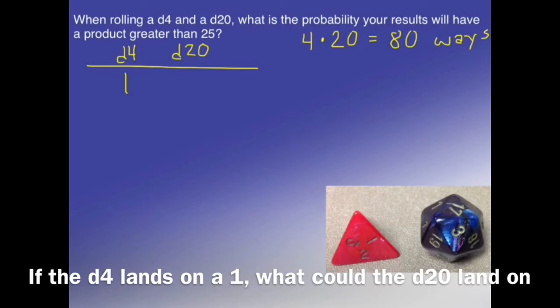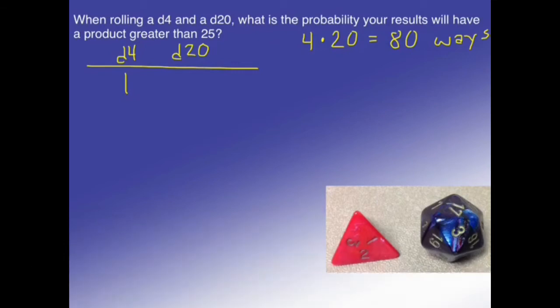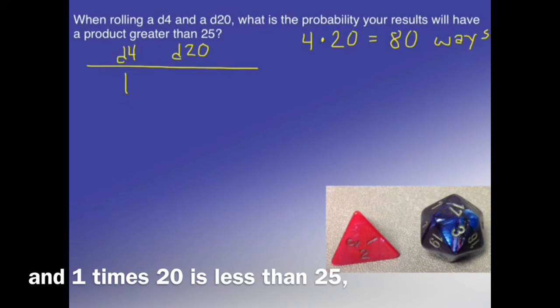If the d4 lands on a 1, then what could the d20 land on that would give us a product greater than 25? Since the highest the d20 can land is 20, and 1 times 20 is less than 25, there are none.